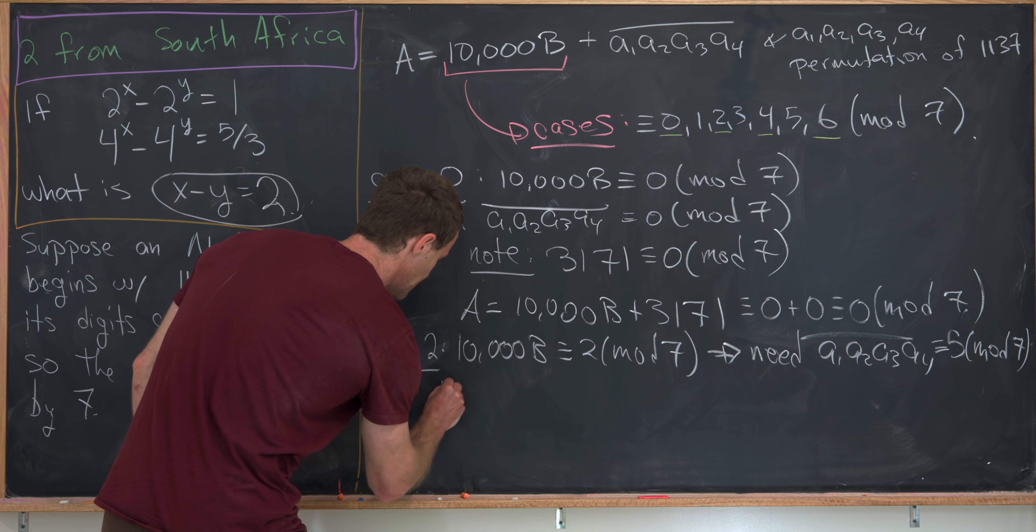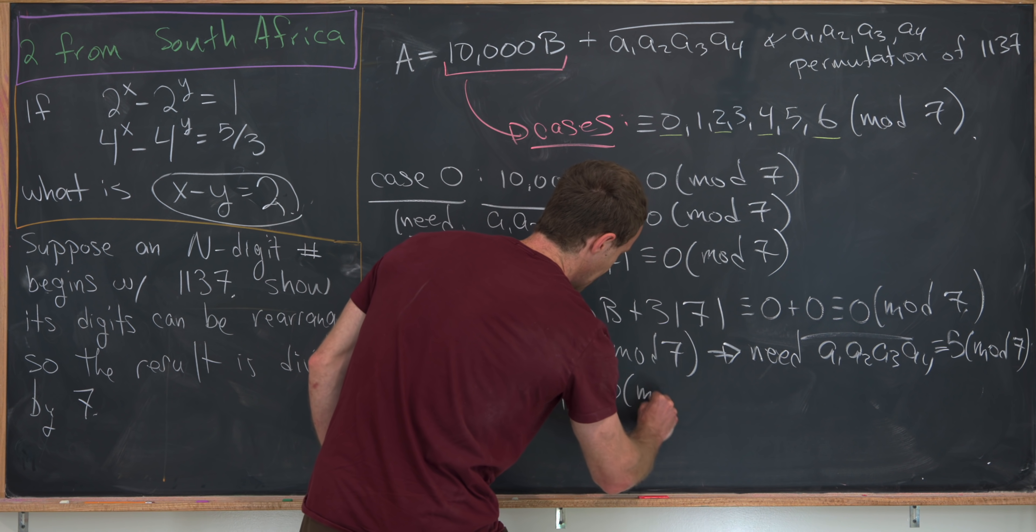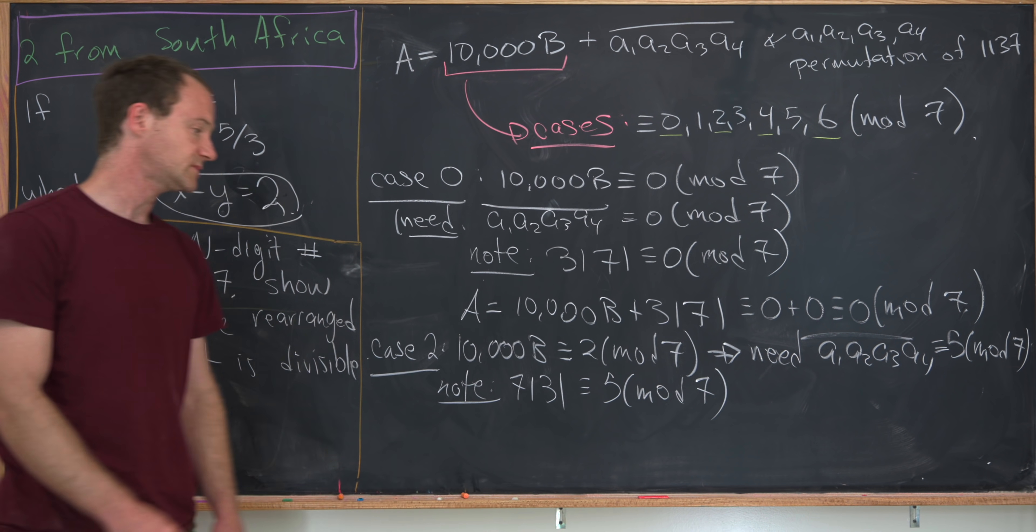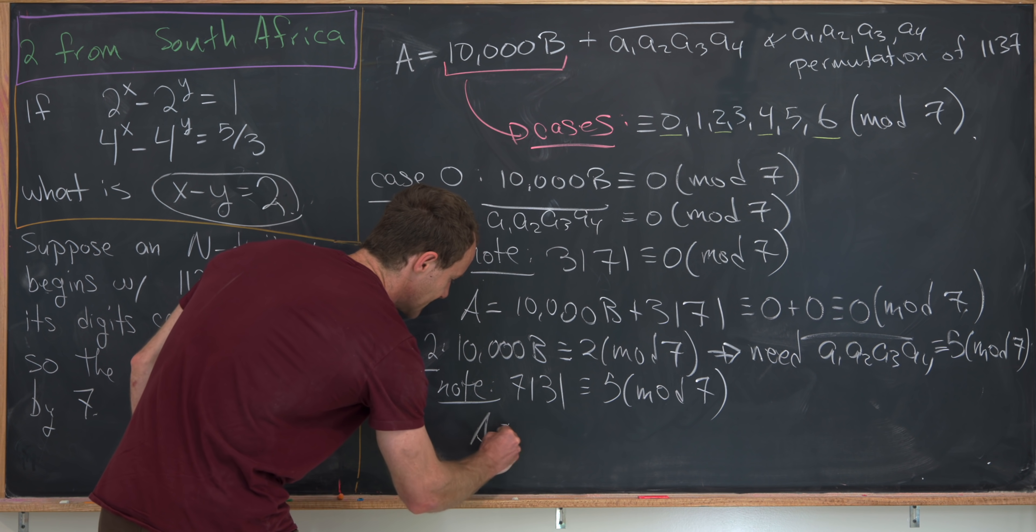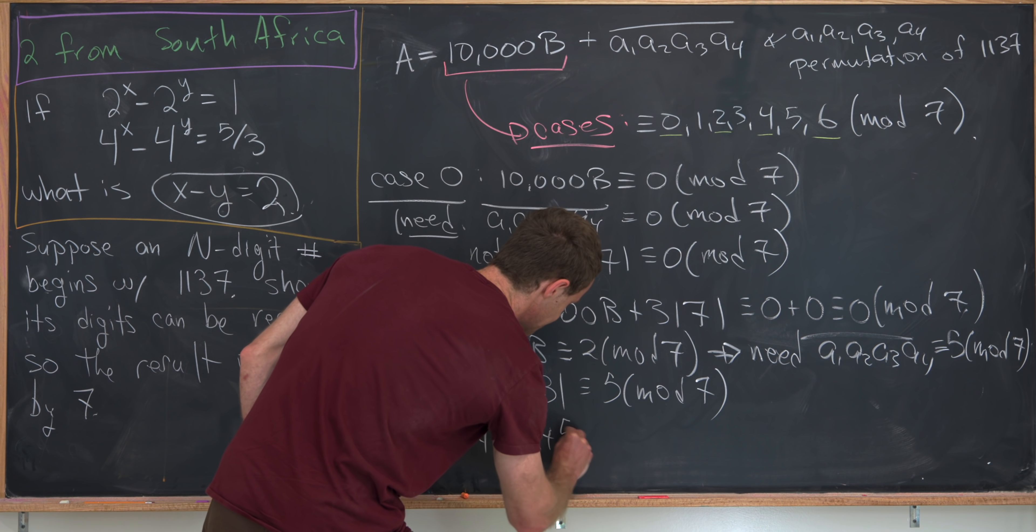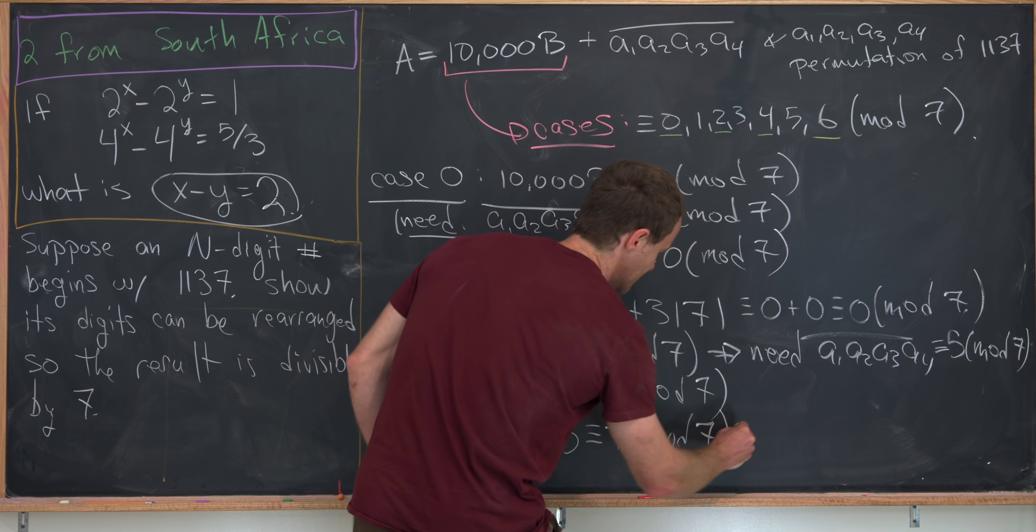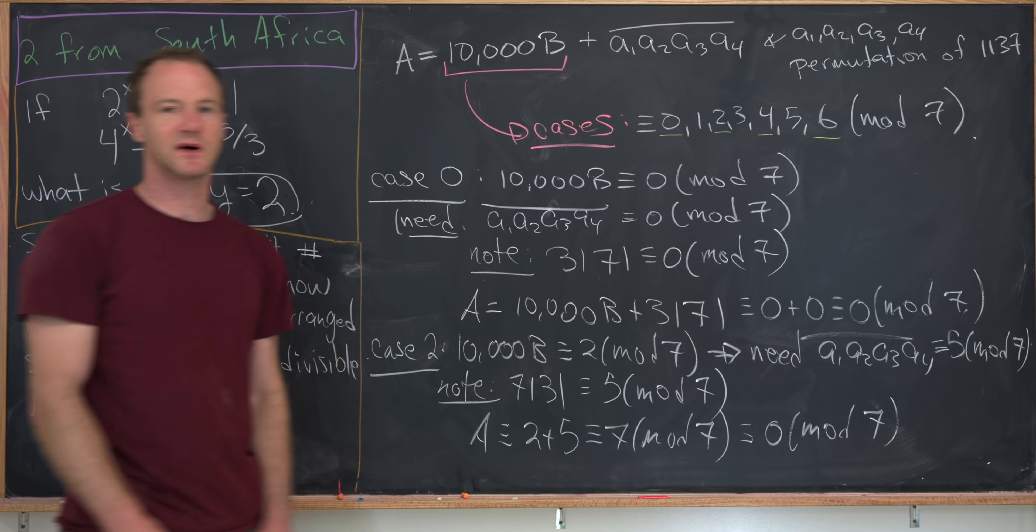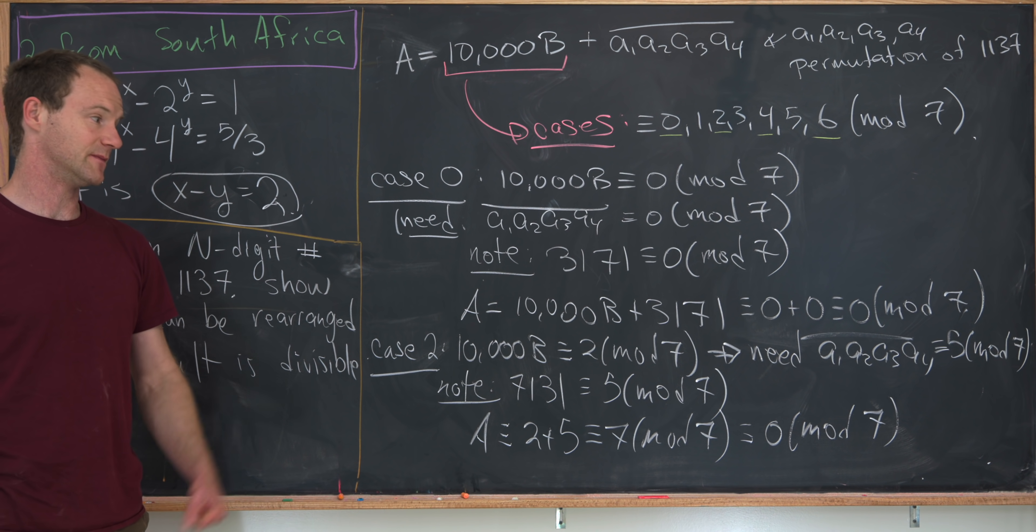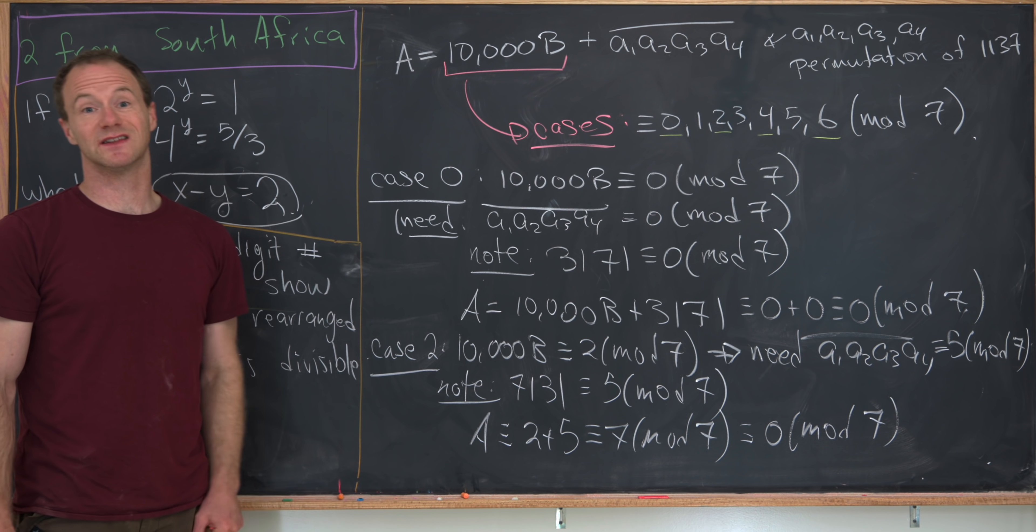And so again, it's just trial and error. So in this case, you can play around with it for a little bit. And you can notice that 7, 1, 3, 1 is congruent to 5 mod 7. So now putting that all together, we'll see that a is congruent to 2 plus 5, which is congruent to 7 mod 7, which is congruent to 0 mod 7. But being congruent to 0 mod 7 is, again, the same thing as being divisible by 7.